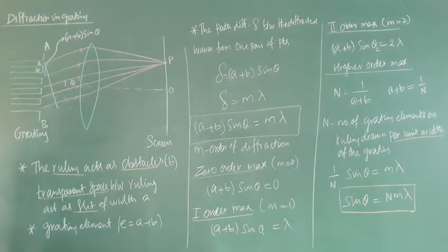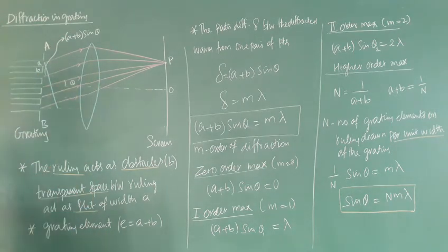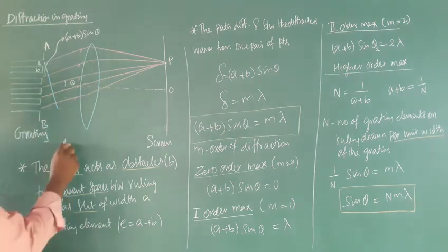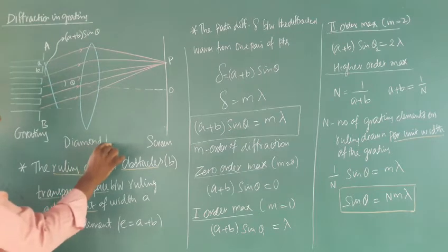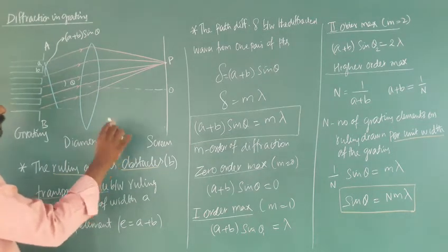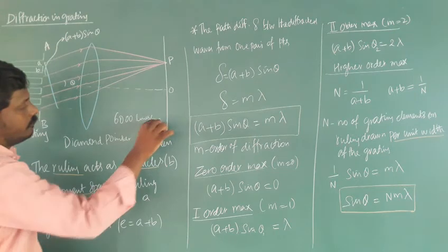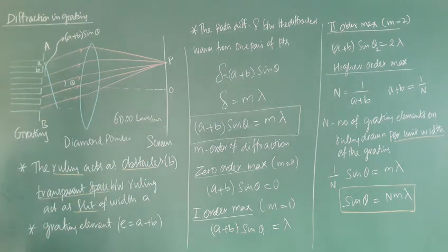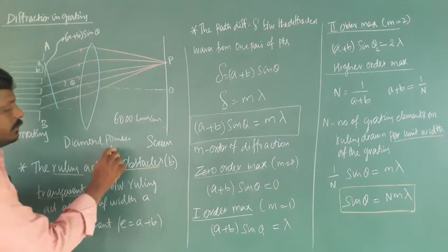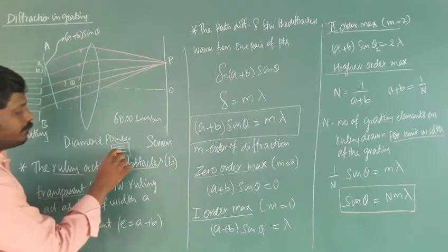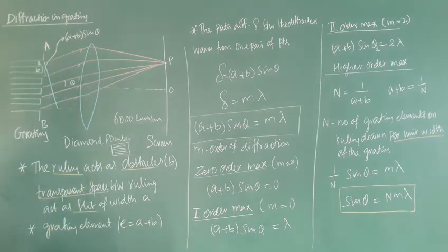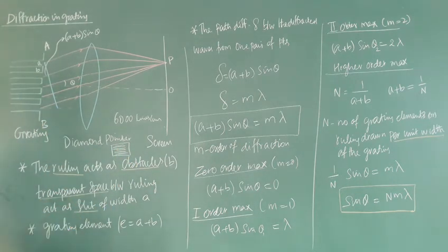Diffraction in grating: a grating has multiple slits of equal width. It is made up of transparent material, and opaque rulings are made using a diamond pointer. Usually a commercial grating has 6000 lines per centimeter. The rulings act as obstacles of width B, and the transparent space between the rulings acts as a slit of width A.